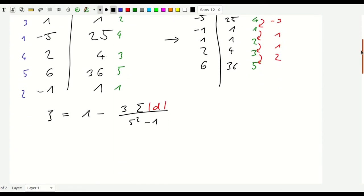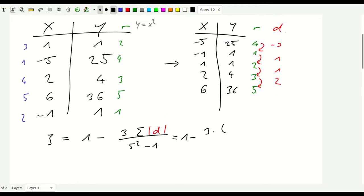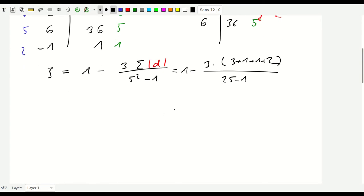And if we evaluate that, we end up with something that's one minus three times and this is okay. This is three plus one plus one plus one plus two divided by 25 minus one. That's equal to one minus three times five plus two times five plus two is seven by 24.